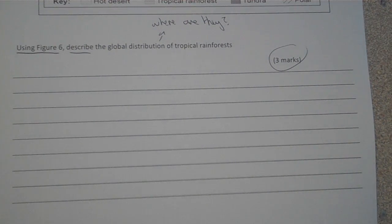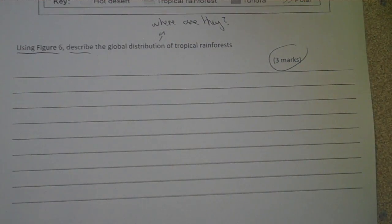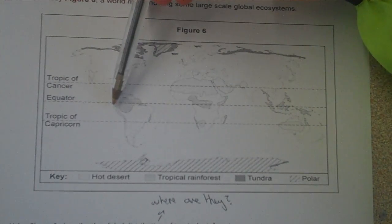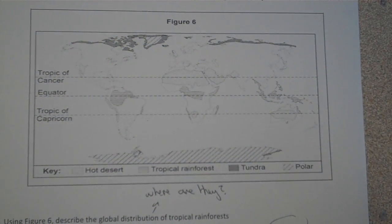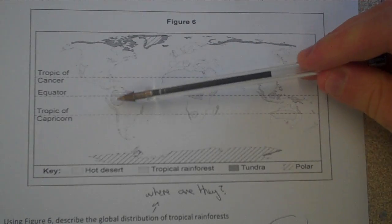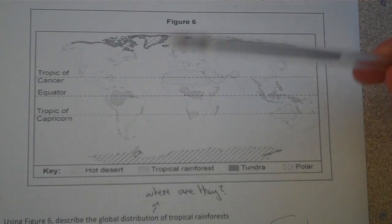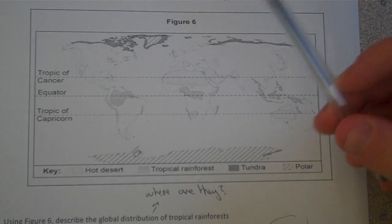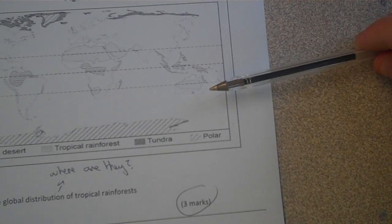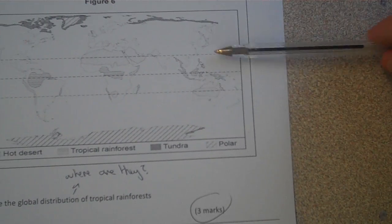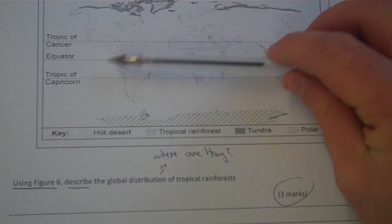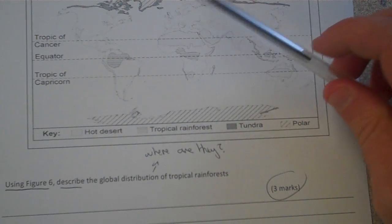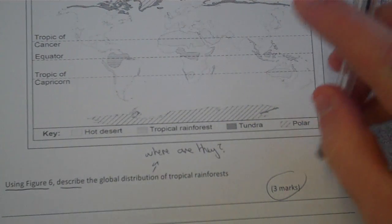Let's have a quick look at the map. Firstly, I can see they are located along the equator. I know from my learning that they're usually within 5 degrees of the equator — that's one point. We can also name some continents: we've got some in the northern part of Australia, some in Southeast Asia, some in Central Africa, some in South America. And I know a real-life example — the Amazon rainforest. So those are going to be my 3 points.